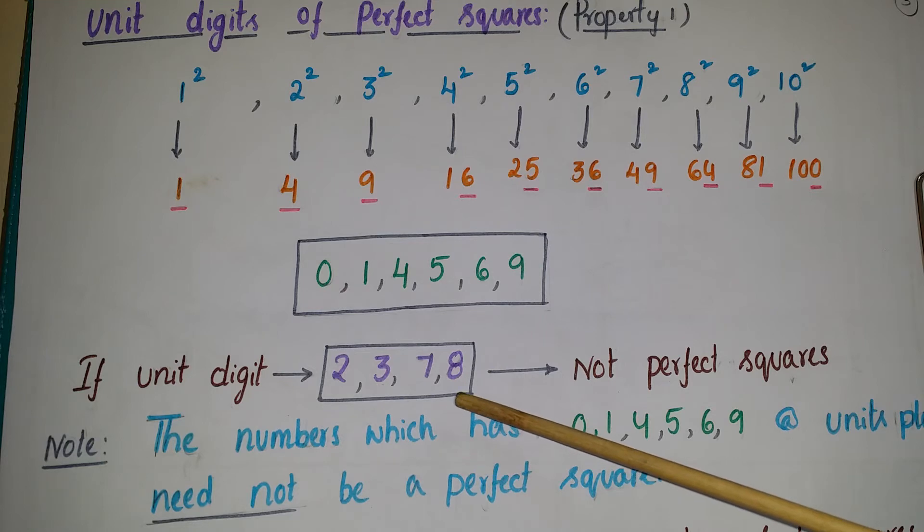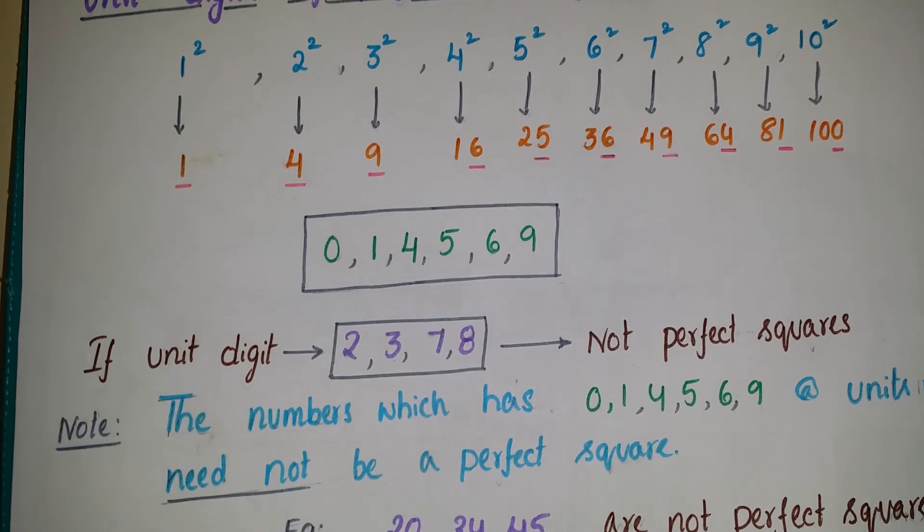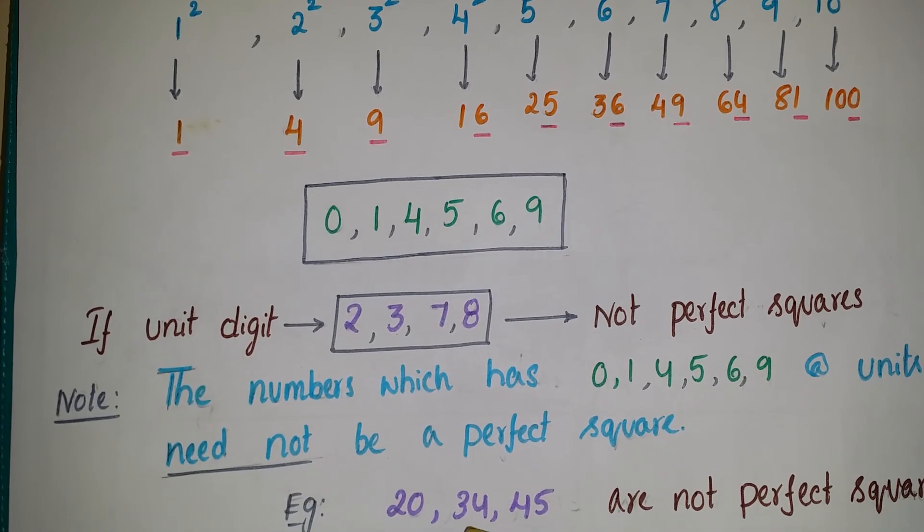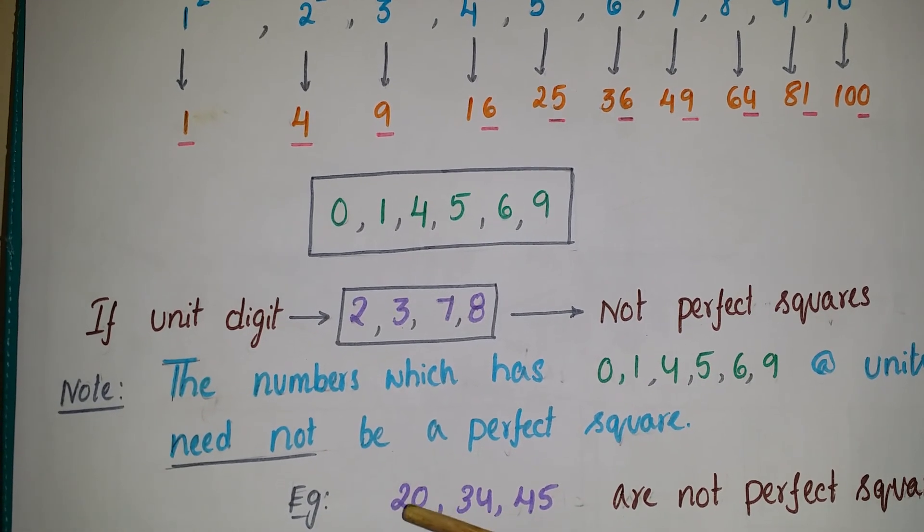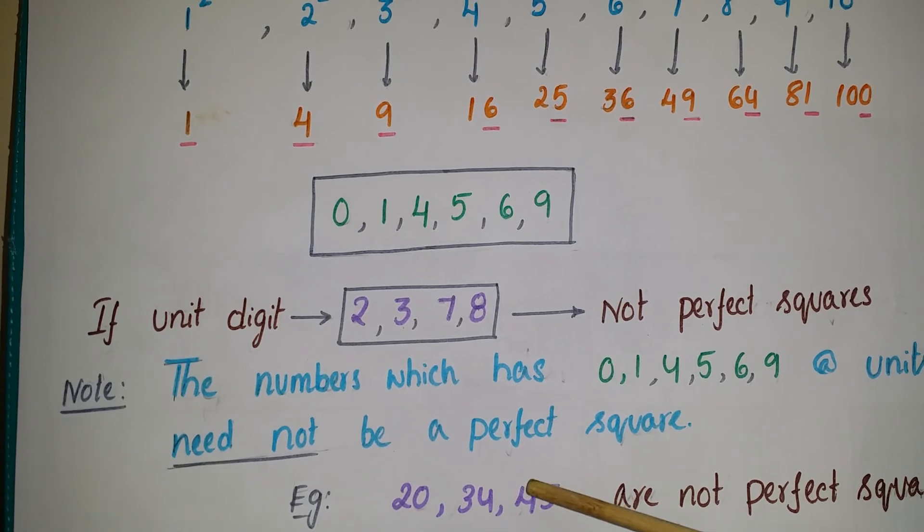See the note here: the numbers which has 0, 1, 4, 5, 6, 9 at unit place need not be a perfect square. Because if you see this example—20, 34, and 45—these are not perfect squares, but the unit digits are 0, 4, and 5.